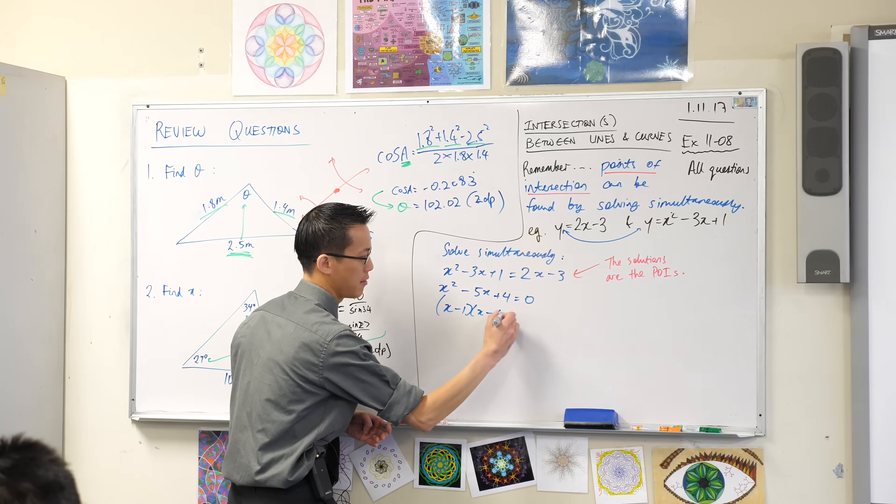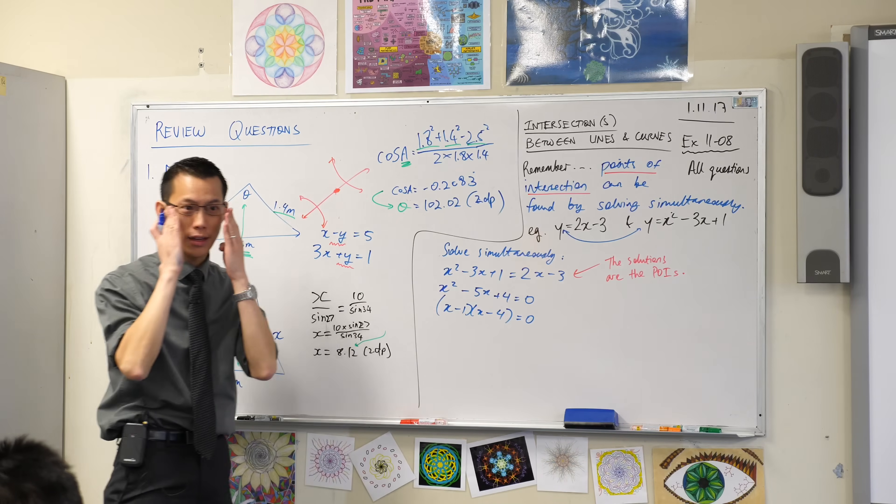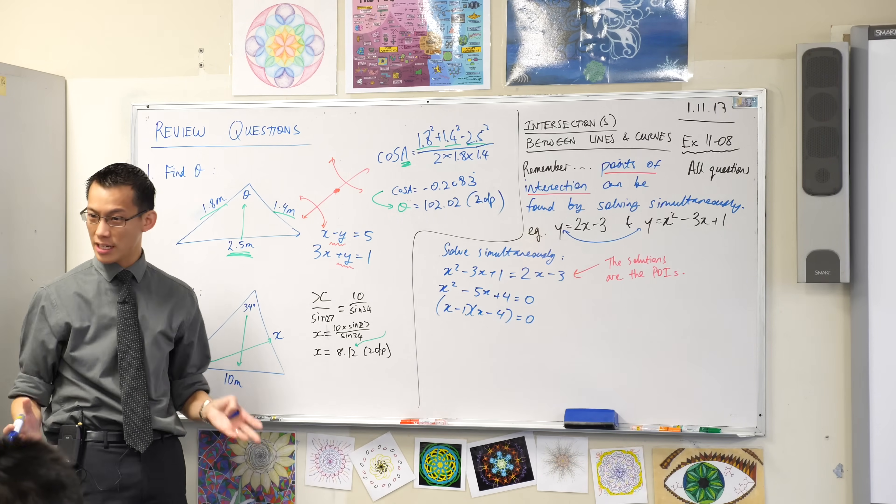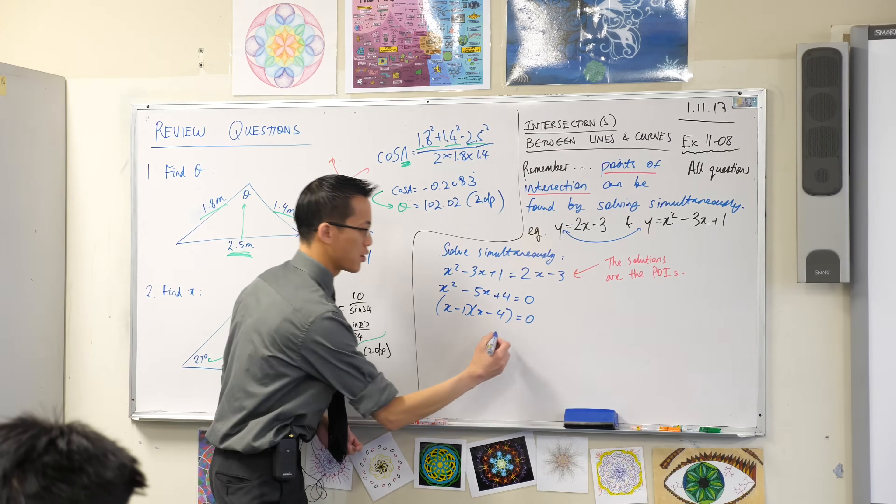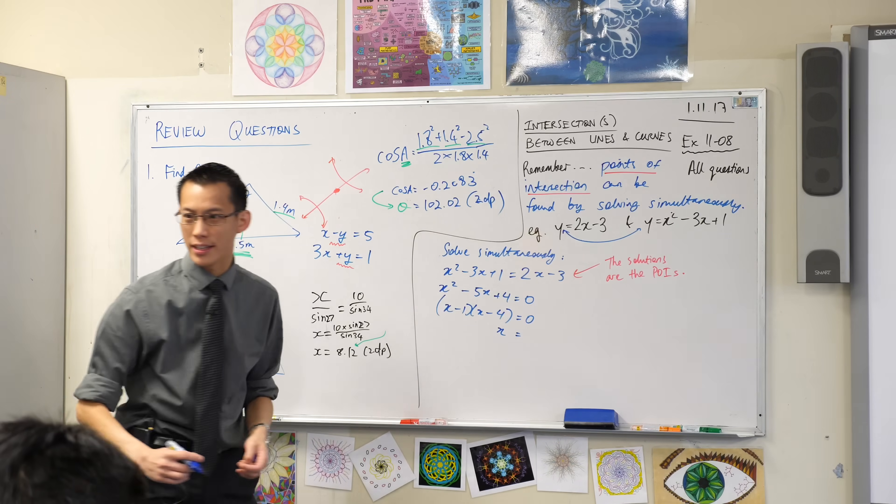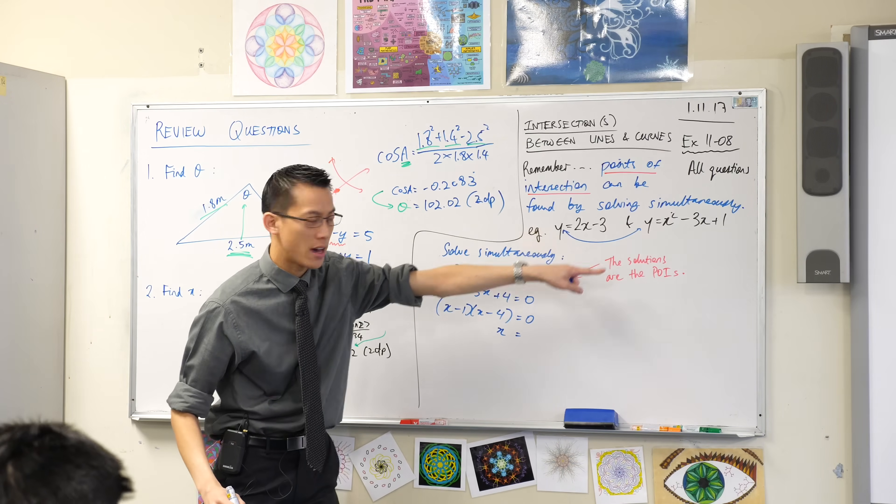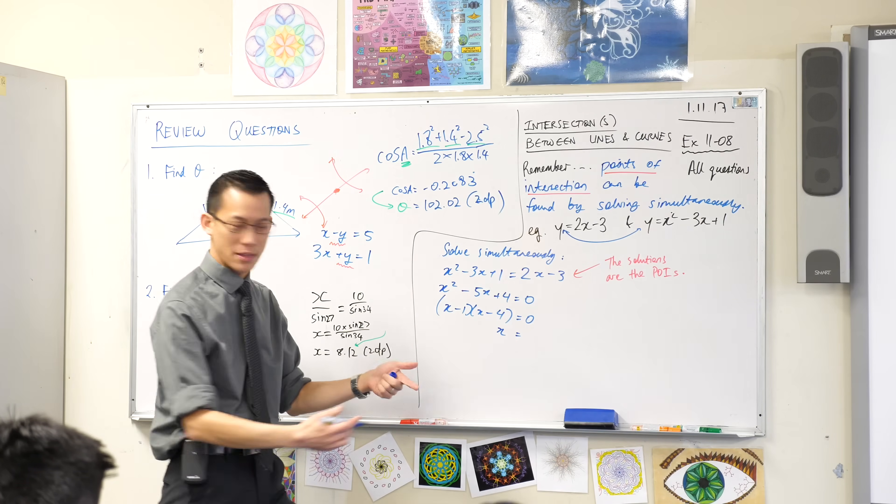x minus 1, x minus 4. So I've successfully factorized. That's nice. So when I get an answer out here, this is why I bothered to write this down. The answer here means something.